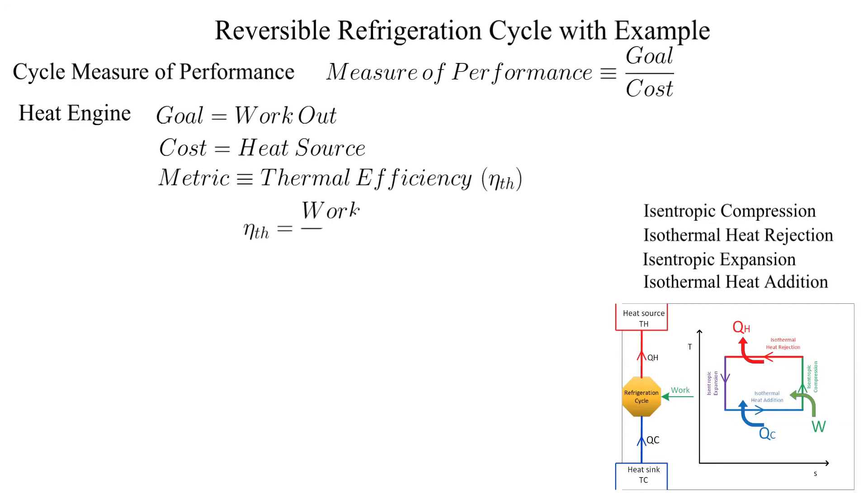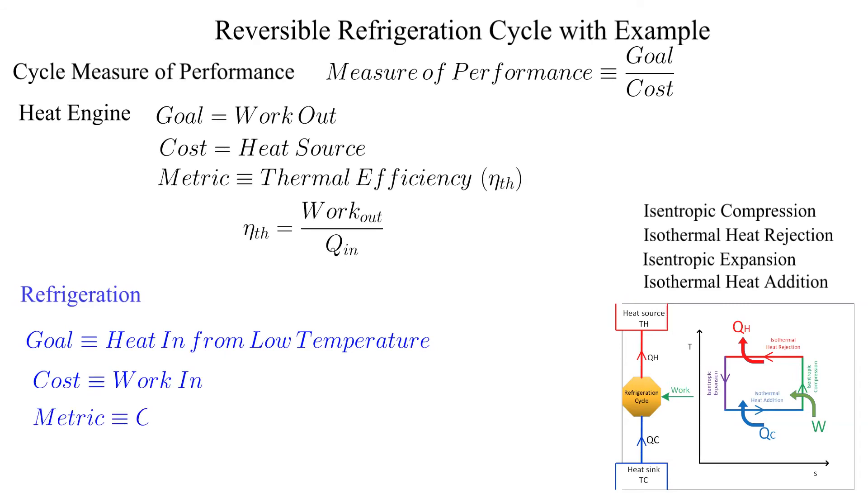Shown are the goals or desired outcomes and costs for both cycles. Both adopt a measure of performance of goal divided by cost. For a heat engine, we call this performance measure the thermal efficiency, which by definition must be less than one.